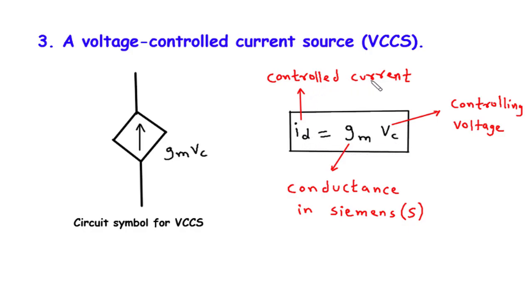Here, ID represents the controlled current, while VC stands for the controlling voltage. The key factor that determines the current flowing through the VCCS is the conductance, represented by GM. GM conductance is measured in Siemens (S) and is the reciprocal of resistance.